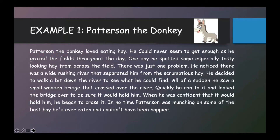Now, let's try to apply the SWBST strategy to summarize the following short story. We will read the story and try to identify the main elements, which are the main character, the setting, the problem, the solution, and the ending. Each of these elements will be color-coded and underlined to make them stand out. The character will be in red, what the character wanted will be colored orange, the problem will be colored yellow, the solution will be colored green, and the ending will be colored blue.